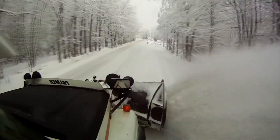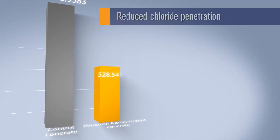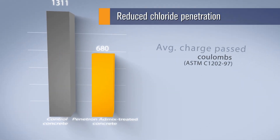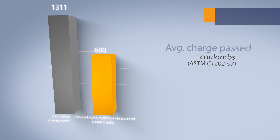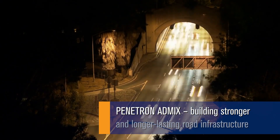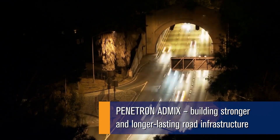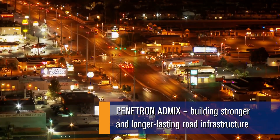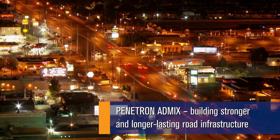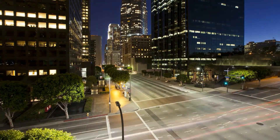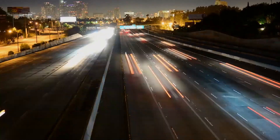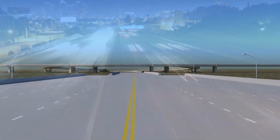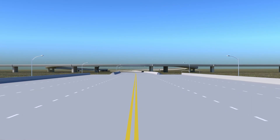Better protection for critical road infrastructure: Penetron AdMix reduces chloride penetration, notably delaying concrete deterioration and extending service life by 60 years or more. Penetron AdMix is the number one contender to effectively future-proofing critical road infrastructure around the globe. Guaranteeing performance, the product has been adopted by numerous government departments and private highway operators looking to enhance service life of concrete roads, reduce operating costs and keep traffic flowing.